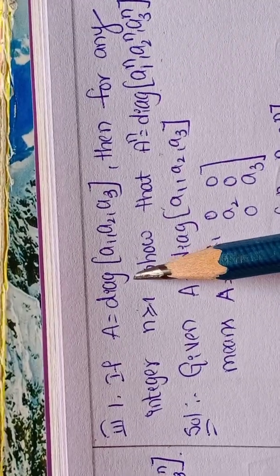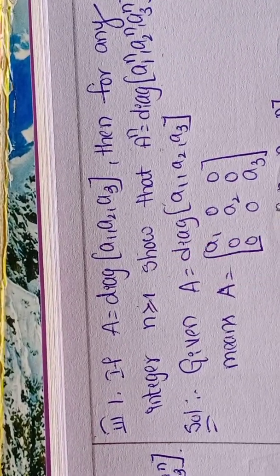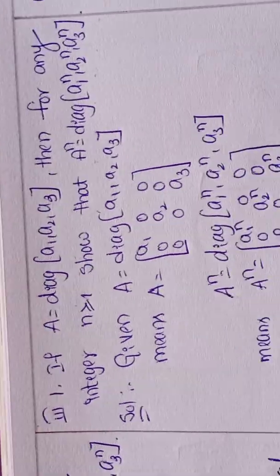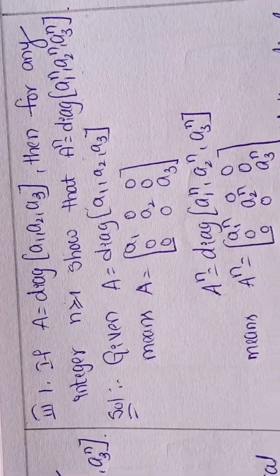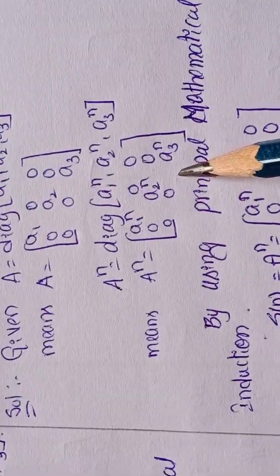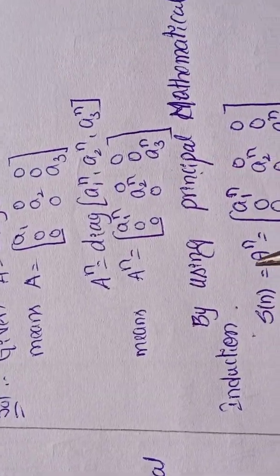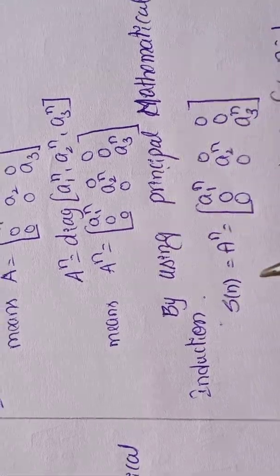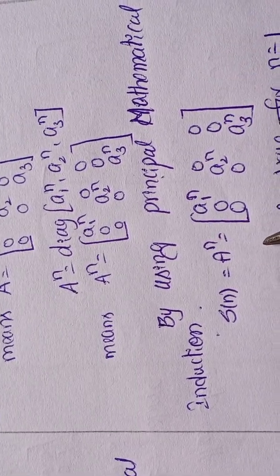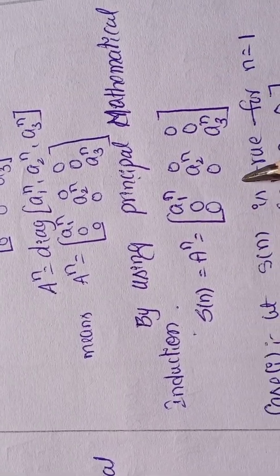Diag means it is a diagonal matrix. A power n means this one. By using principal of mathematical induction, S of n equal to A power n.